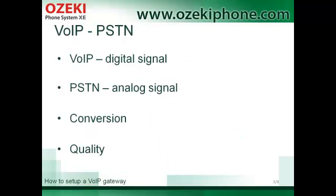While the traditional phone network carries conversations as analog signals, VoIP network carries it as digital signals. You can see that the two types of network use different signals.